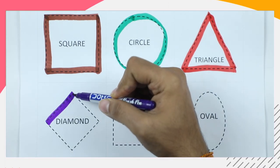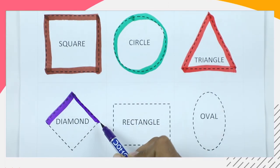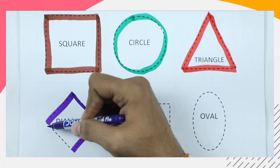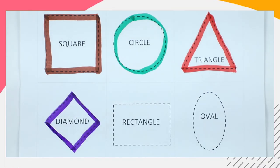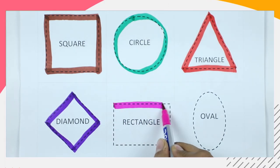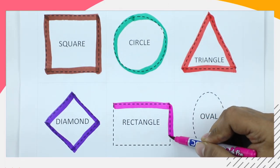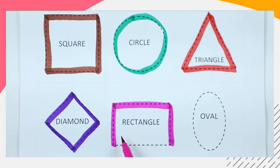We make a diamond with purple color — it's a diamond shape. Rectangle, we make a rectangle with pink color — it's a rectangle.